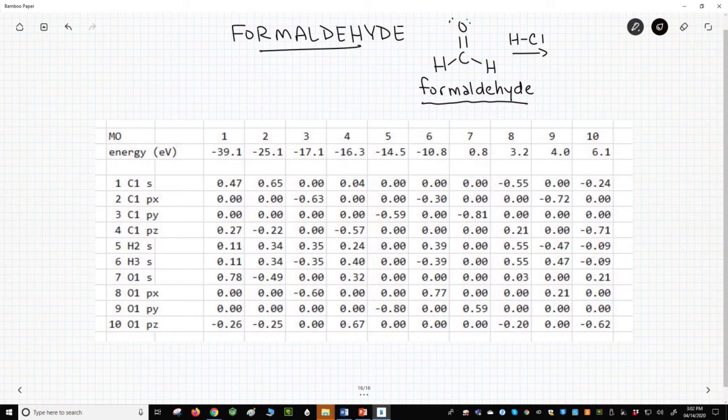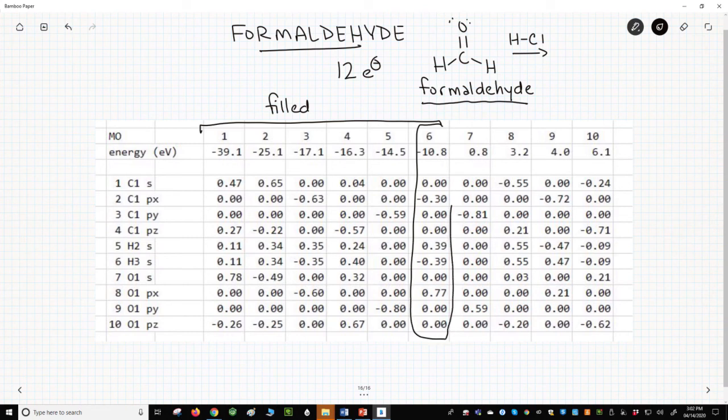Formaldehyde has 12 electrons in its valence shells, four bonds and two lone pairs. Twelve electrons will fill six molecular orbitals. The sixth orbital, the highest energy of these six, is the HOMO.